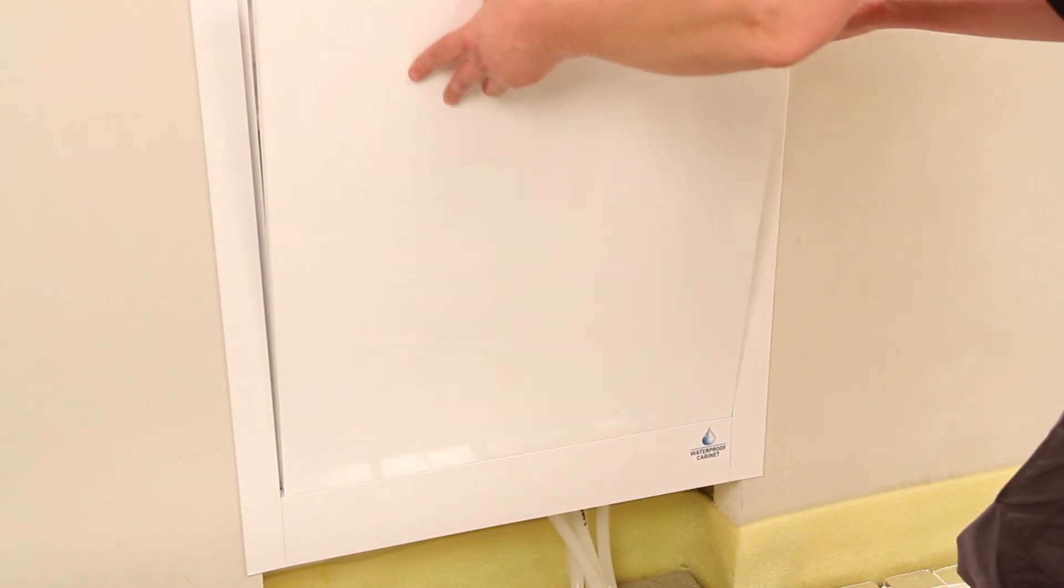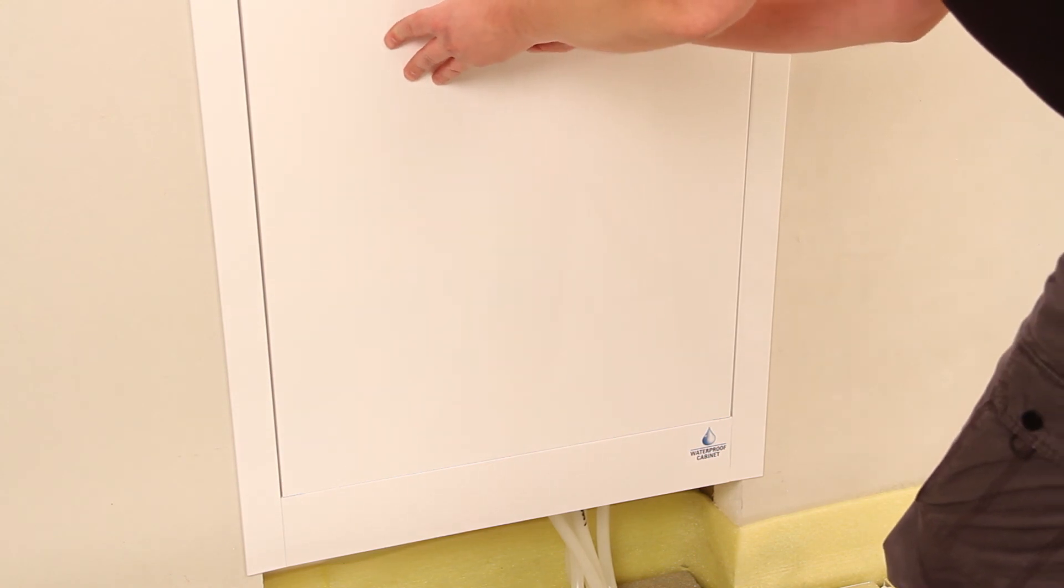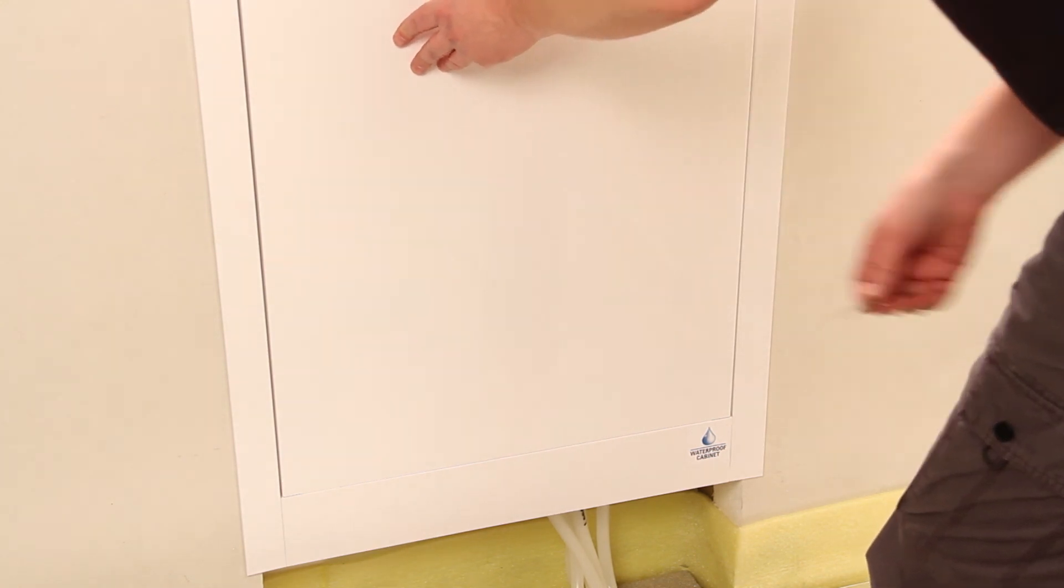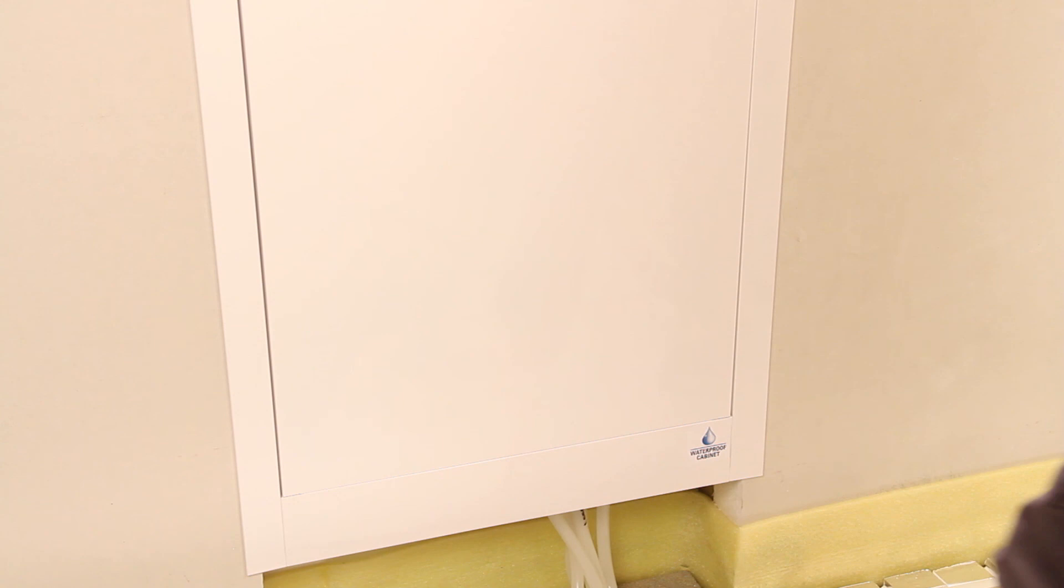The floor heating system and manifold is now commissioned and ready for the electrics to be installed and final connection to the heat source along with the addition of a suitable inhibitor.